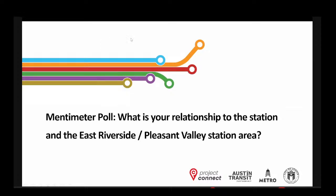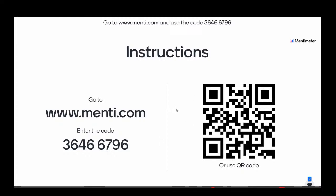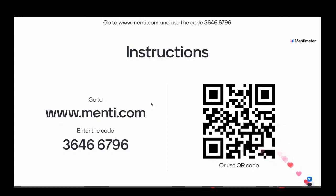To participate in the live poll, go to menti.com and enter the code 3-6-4-6-6-7-9-6. For those joining via social media who may not have access to the live interpretation, here are the instructions in Spanish: para participar en nuestra encuesta, visiten menti.com y agreguen el código tres seis cuatro seis seis siete nueve seis.